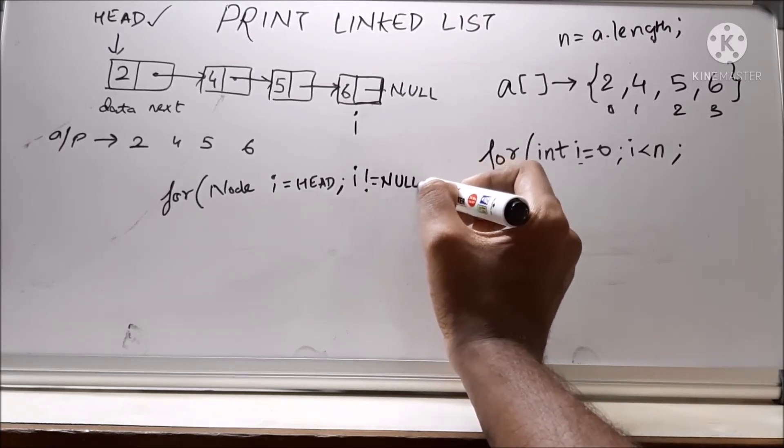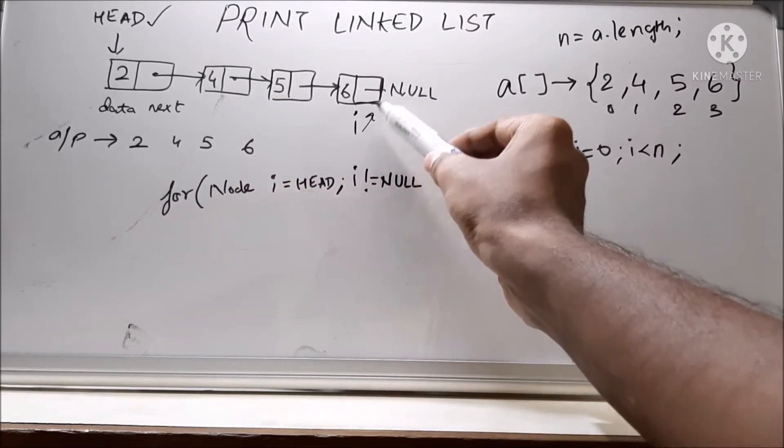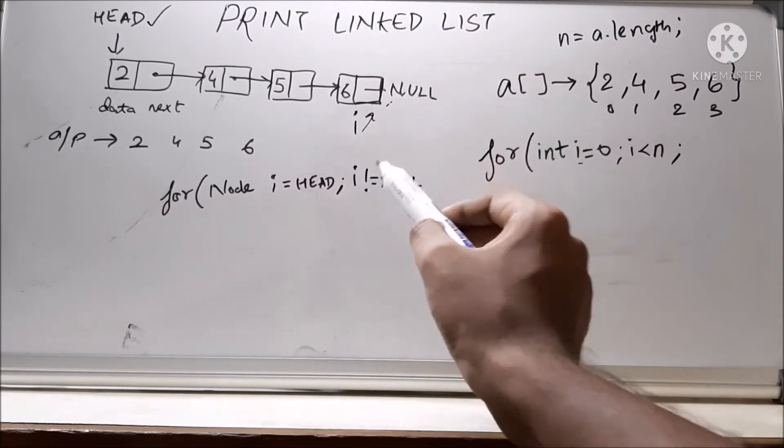Here when i comes and we see it as null, we have to stop. So this is the terminating condition.